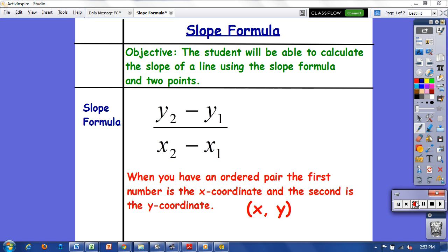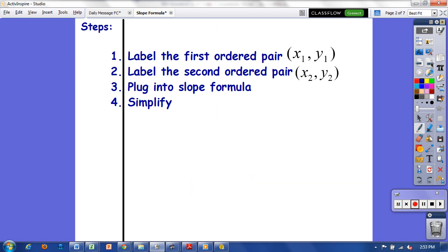Just to recap, when you have an ordered pair the first number is the x-coordinate and then the second would be your y-coordinate. Let's go through these steps. You will label your first ordered pair x₁ and y₁, and then the second ordered pair would be x₂ and y₂.